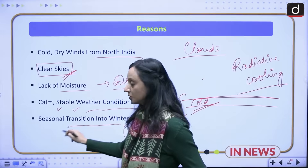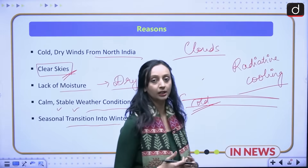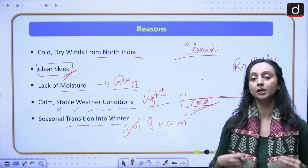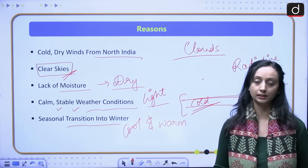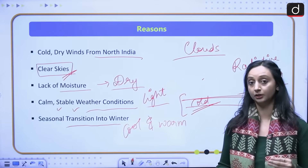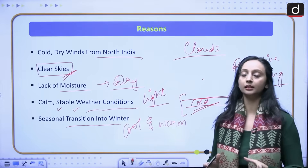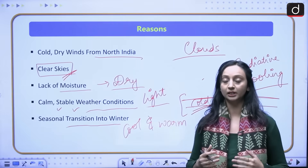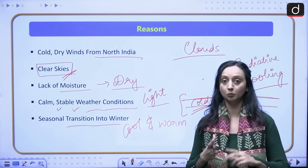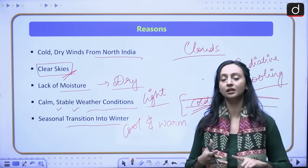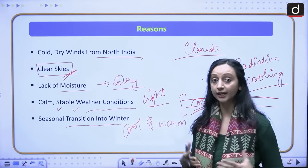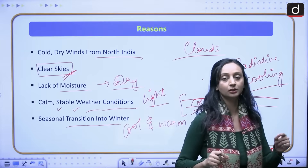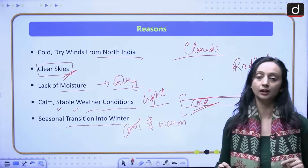Right now there is a seasonal transition into winter, so naturally more cold waves are expected and temperatures are falling. This is also a natural reason we are seeing cold waves in the southern part of the country. Because of temperature inversion, no mixing happening, no moisture-laden winds, dry winds, stable conditions, clear skies, and radiative cooling — all these are the scientific reasons behind the cold wave situation in Telangana at the moment.